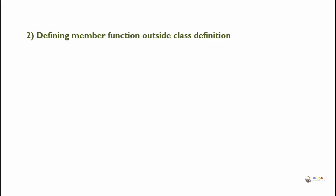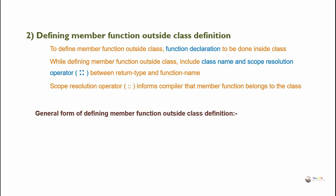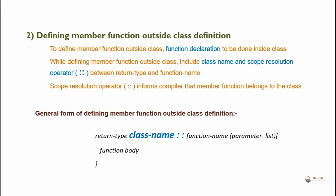The next method is defining member functions outside the class definition. To define a member function outside the class, the function declaration must be done inside the class. While defining the member function outside, include the class name and scope resolution operator — the double colon symbol — between the return type and the function name. The scope resolution operator informs the compiler that the member function belongs to that class.